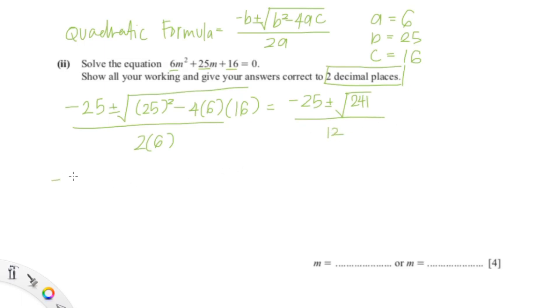So now we're going to find the value of m, which is (-25+√241)/12 and (-25-√241)/12. Now you just put this into your calculator to get your values. And remember you need to give your answers in two decimal places because it's in the question.